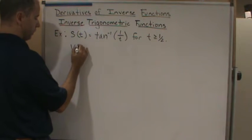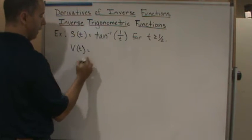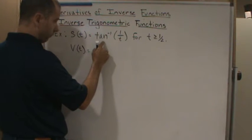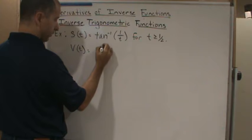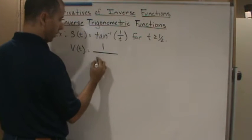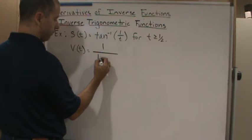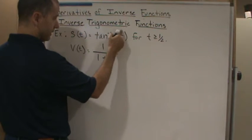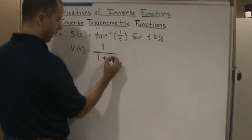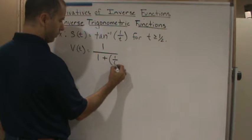Again, it's the derivative of the outside. The derivative of the outside is 1 over 1 plus x squared, or in this case the function squared. So 1 over 1 plus (1/t) quantity squared, times the derivative of the inside function, which is 1 over t.